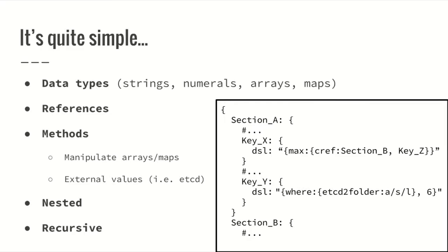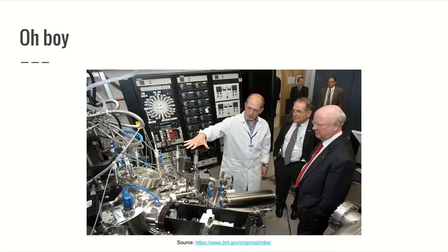And then I said, okay, is there anything more you want to tell me? And then they said yes. This configuration file has a DSL embedded in it, and this DSL has data types — strings, numerals, arrays, and maps — and it references other parts of the configuration file. And it has methods on these data types to manipulate them and to fetch values from remote key-value stores. It is nested, and it is recursive. Then I thought: oh, no.